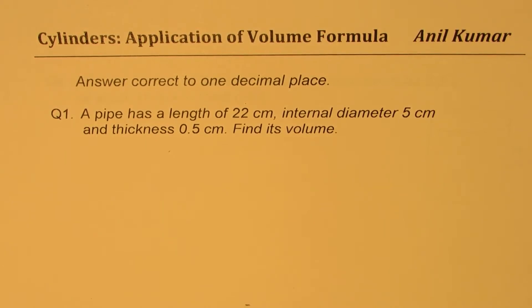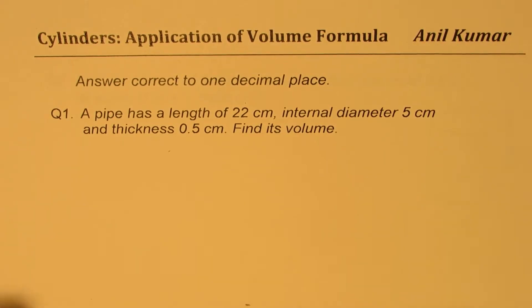The four questions are: question number one — a pipe has a length of 22 centimeters, internal diameter 5 centimeters, and thickness 0.5 centimeters. Find its volume.